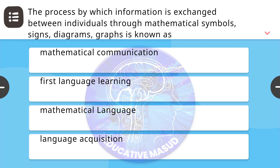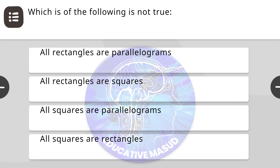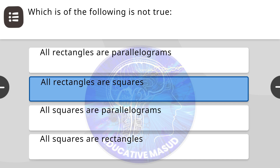Next question: the process by which information is exchanged between individuals through mathematical symbols, signs, diagrams, and graphs is called? Correct answer is mathematical communication. Next question: which of the following is not true? Correct answer is all rectangles are squares.